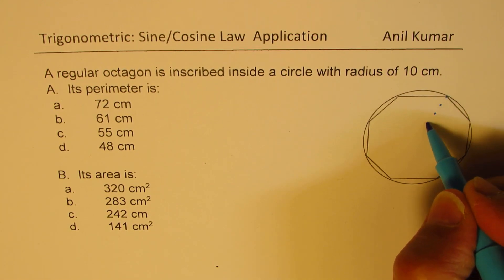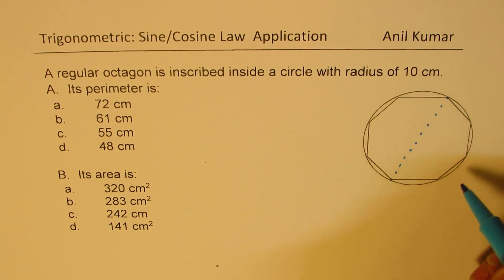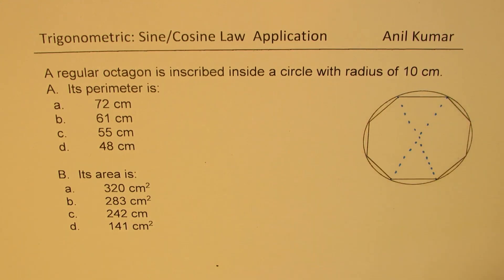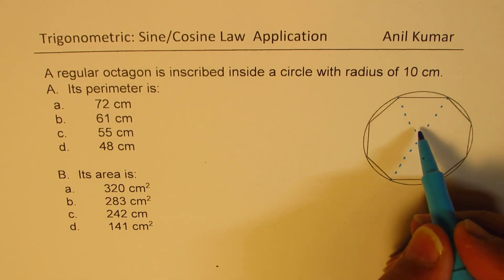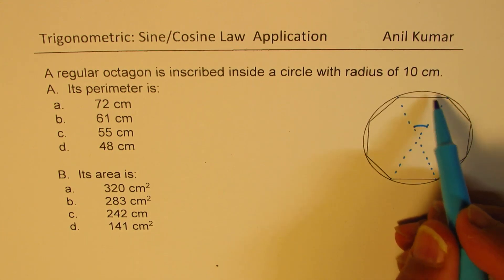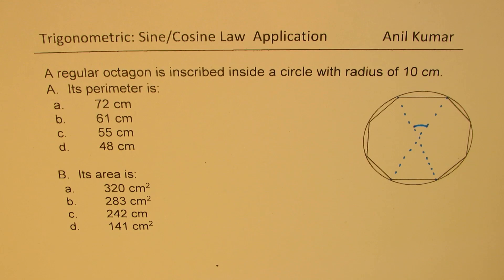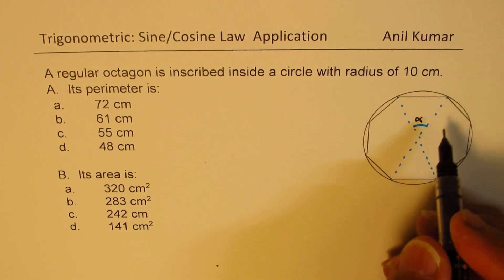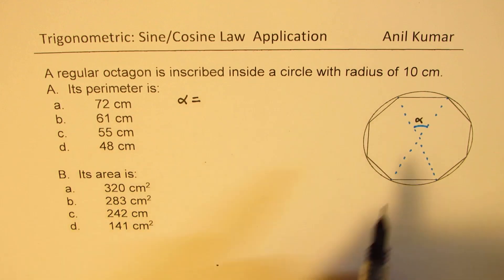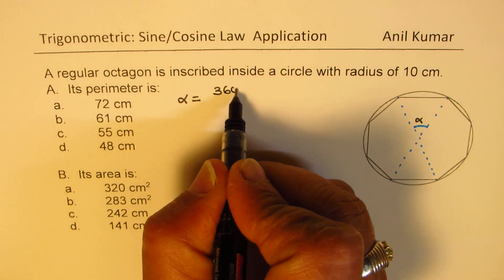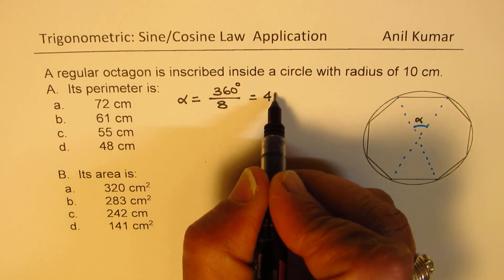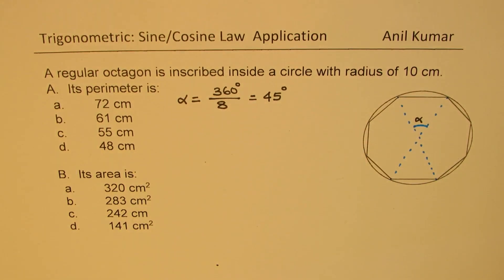In an octagon, you can make eight triangles. We'll find each side with the help of these triangles. If you look at the central angle — since there are eight triangles and the total is 360 degrees — each central angle, let's call it alpha, is equal to 360 degrees divided by 8, which gives 45 degrees. So angle alpha is 45 degrees.